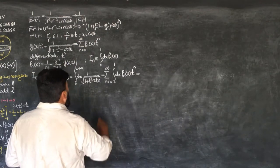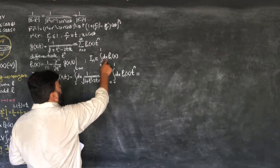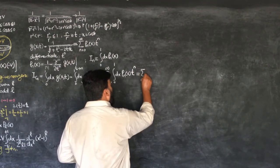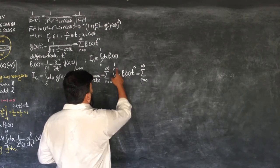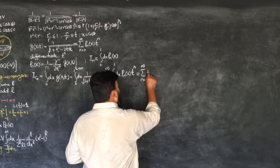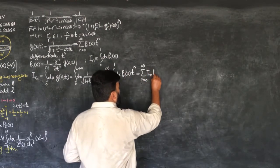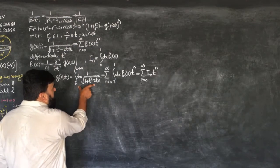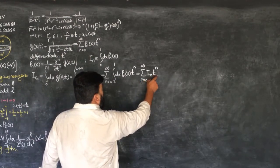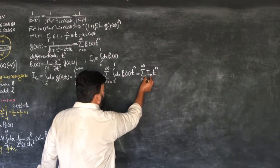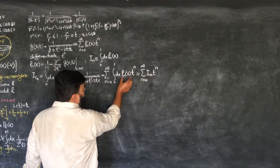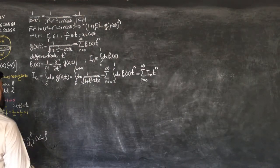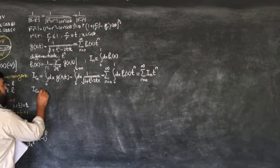I define the integral from 0 to 1 of P_n(x) dx as I_n. So I can write the summation from n=0 to infinity of I_n times t^n. Now if I find this integral, the coefficients of t^n are I_n, and since I_n equals the integral of P_n(x), the P_n values are what we need to find.